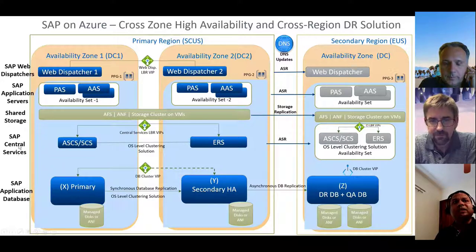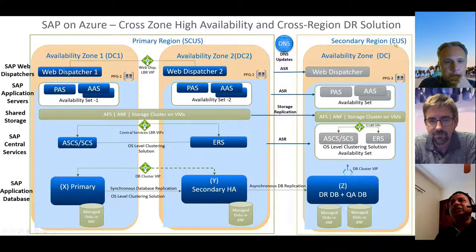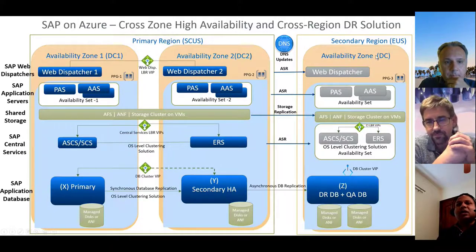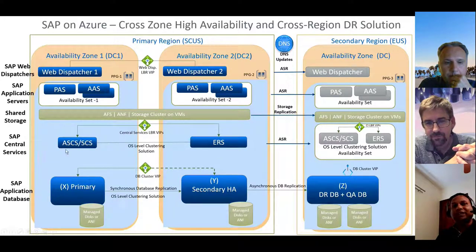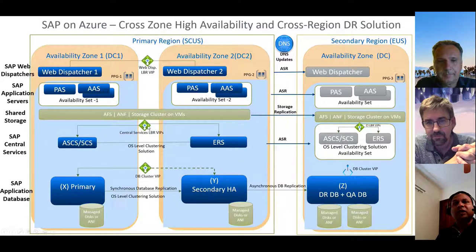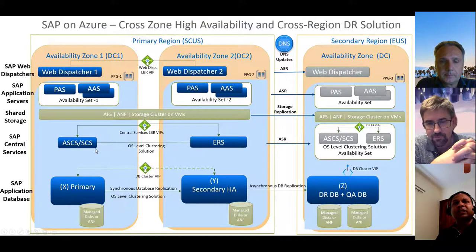The SAP central services — ASCS for ABAP, SCS for Java, and the ERS — were split across two zones, AZ1 and AZ2. The primary region is South Central US and the secondary region is East US. For both the HANA database and the central services, we used the pacemaker cluster on SUSE Linux as the OS-level clustering solution. Zone-redundant Azure load balancers were used for the ASCS and ERS nodes.